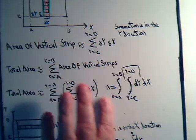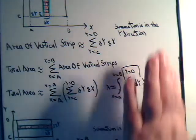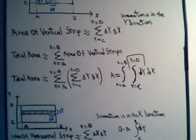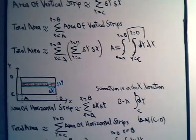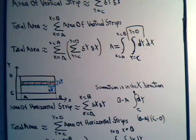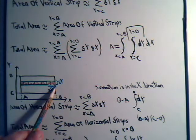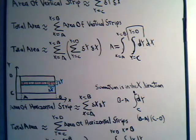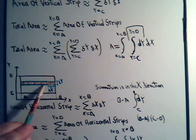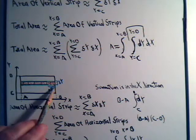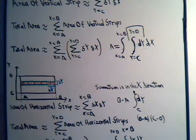Now let's take the same problem, but instead of constructing a vertical strip, we'll construct a horizontal strip. Here we have shaded regions, each with width dx and height dy, so each has area dx dy. We add up all the shaded regions from x equals a to x equals b, and that gives the approximate area of one horizontal strip.